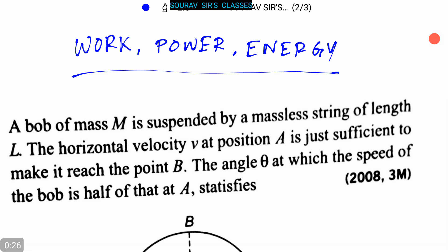Today we are solving some problems on work, power and energy. Our first question is: a bob of mass m is suspended by a massless string of length l. The horizontal velocity v at position A is just sufficient to make it reach the point B.